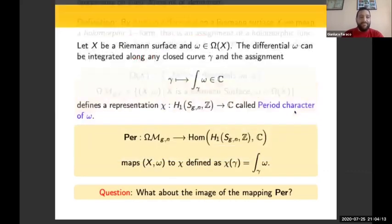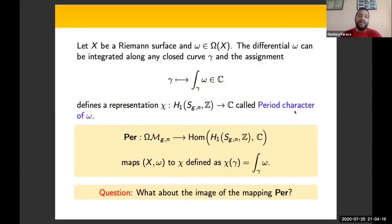Fix a Riemann surface and pick an abelian differential ω. Since ω is a holomorphic one-form, it can be integrated along any closed curve. We may define a mapping that takes each curve γ to the complex number defined by the integration of ω along γ. Such an assignment defines a well-defined representation from the first homology group with integer coefficients to the additive group of complex numbers.